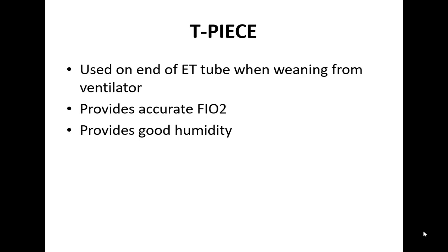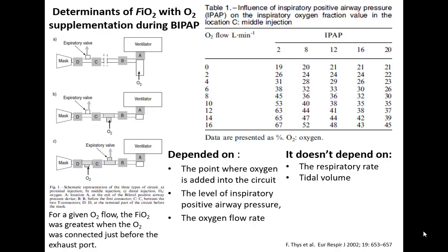TPS can give high FiO2 but humidification can be a problem. For patients on bypass, we never really know what the FiO2 is. A study done on a lung model tested putting oxygen at various points — in the middle of the tube, close to the expiratory valve, or through the ventilator — and found that FiO2 was greatest when oxygen is connected just before the exhaust port.